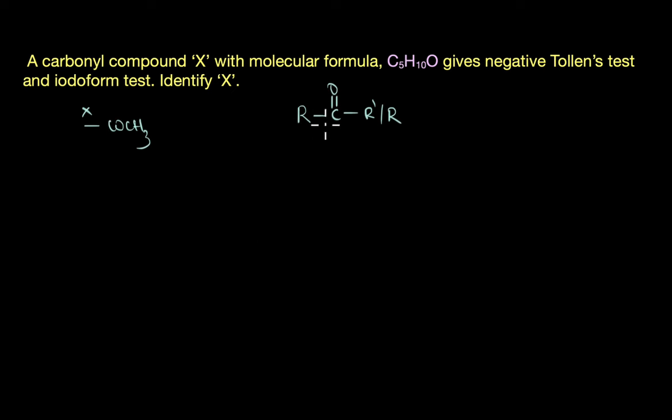That is, there is no COCH3 group present in this carbonyl compound X. So we have narrowed down the structure of X to a ketone, and a ketone which is not a methyl ketone, or the one which does not have a COCH3 group. So is this information sufficient to figure out the structure of X? Let's see. A ketone should have minimum three carbon atoms.